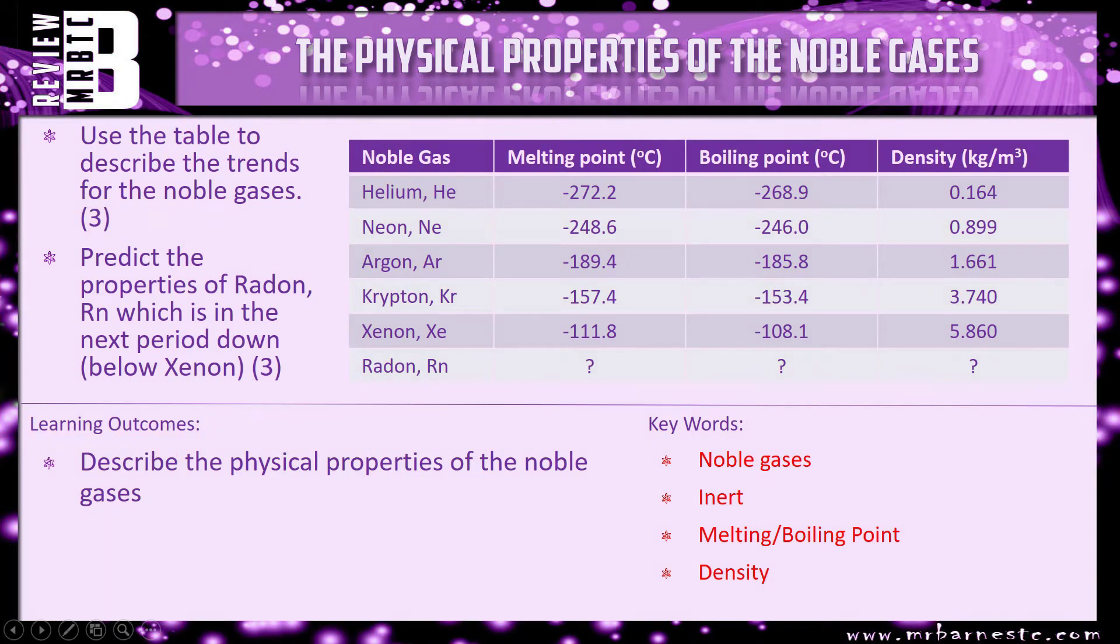Okay that brings this video to an end. There is a review question which says use the table to describe the trends for the noble gases and then predict the properties of radon which is in the next period down below xenon.